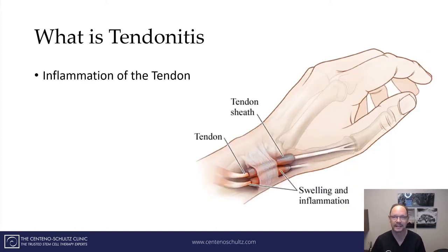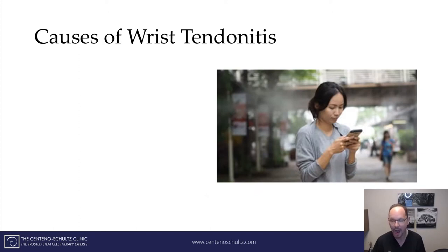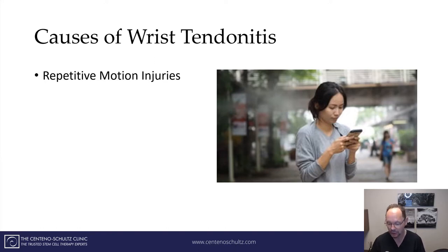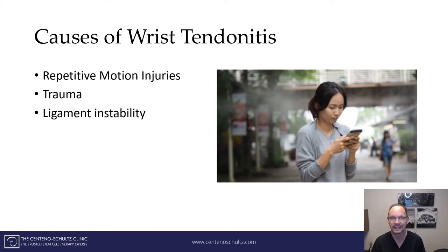Tendonitis, in its simplest term, is simply an inflammation of that tendon. You can see the muscle belly comes in and then it becomes the tendon, and the tendon itself can become inflamed — that's what tendonitis is. The major causes include repetitive motion injuries, like texting or typing, using our hands repetitively. Also trauma and sports injuries, ligament instability, arthritis — including osteoarthritis and rheumatoid arthritis — diabetes, and age over 40.